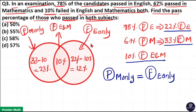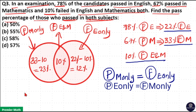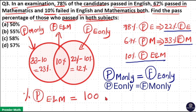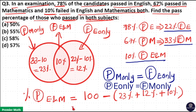So the remaining students — the percentage of students who passed in both English and Maths — equals 100 minus: students who failed Maths only (23%) plus students who failed English only (12%) plus students who failed both (10%). That is 100 minus 45, which equals 55%. So option B is the answer.